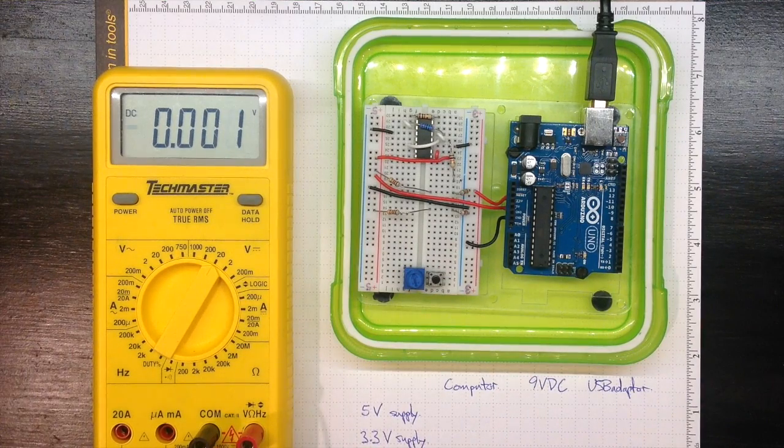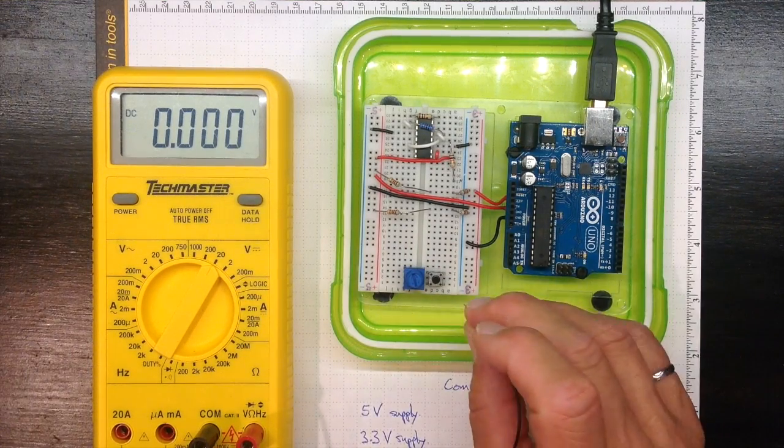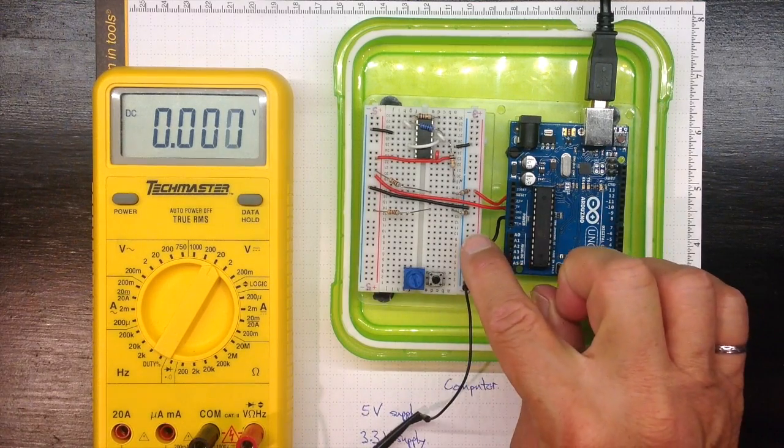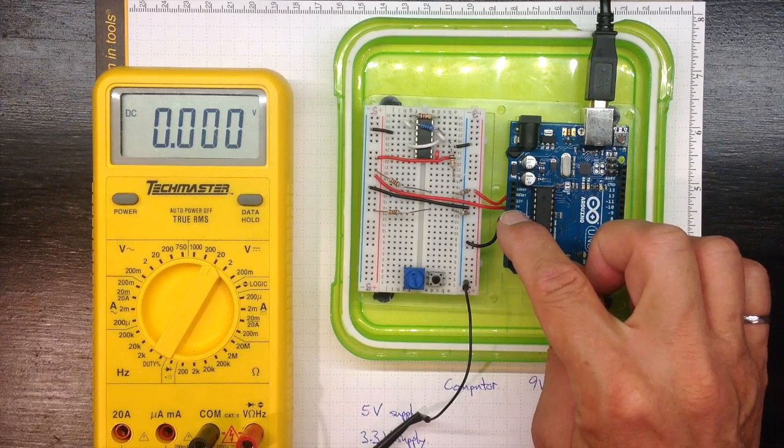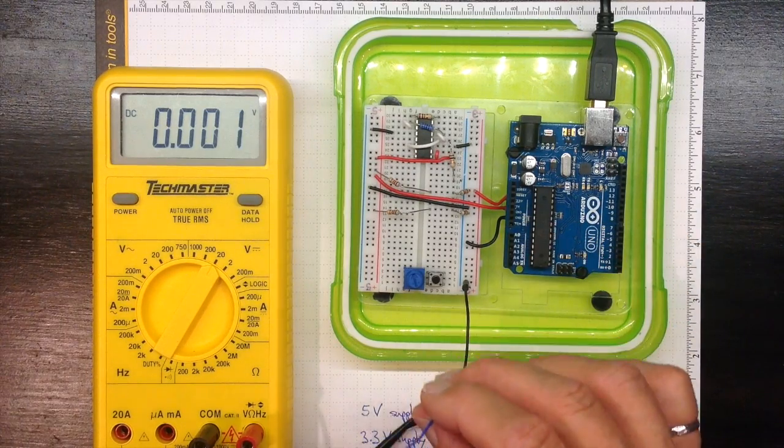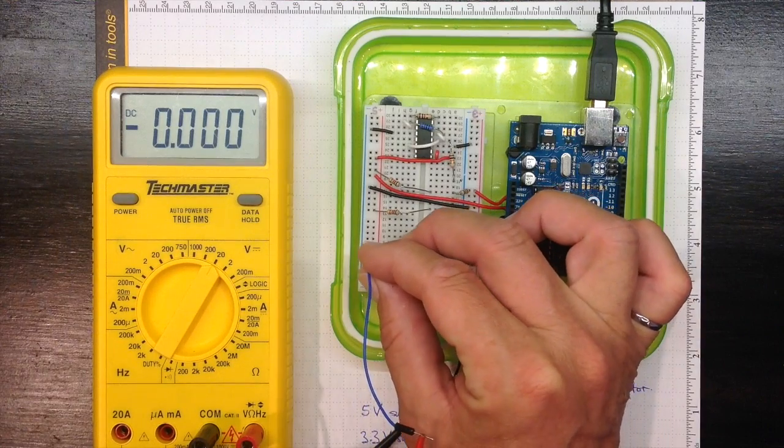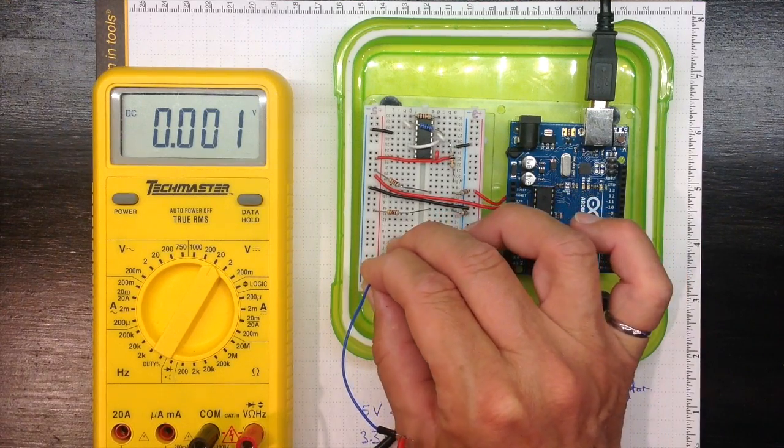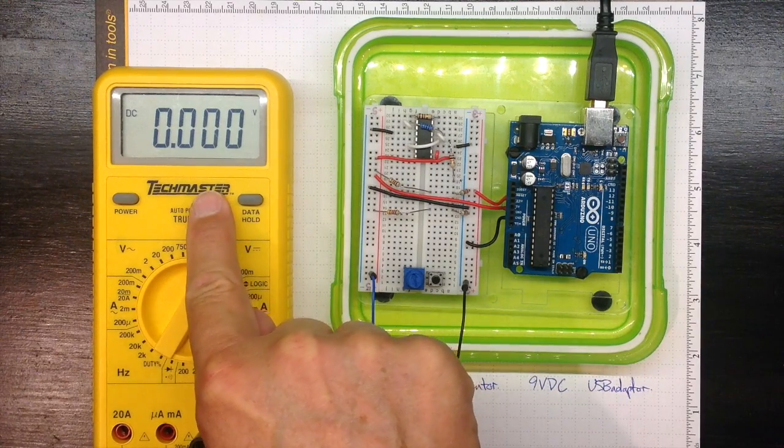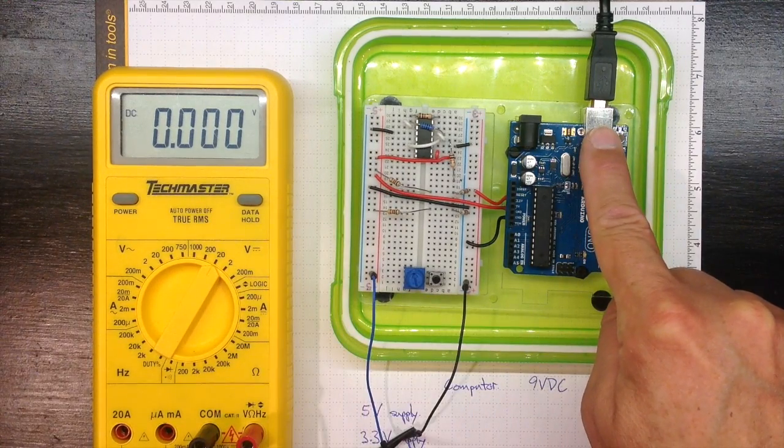So I'll take the black lead from the common and plug it into the ground potential. That's connected through this black wire here to the ground on the Arduino. And to start off with, I'll connect the red lead to the plus 5 volt supply on this side of the breadboard. I see 0 volts because there's no power applied to the Arduino.